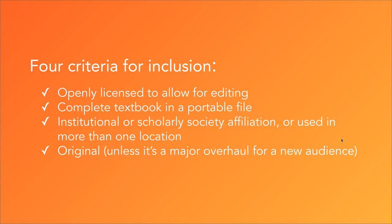And finally, the book must be the original book. We did this with our faculty audience in mind. One of the many benefits of an openly licensed textbook is that it can be changed and adapted to best meet the needs of a student audience anywhere. However, thinking about having all of those adaptations in the library, we figured it would be a bit overwhelming for faculty to weed through all the different variations of a particular book. So we really try to stick to the original book of record, unless it has been heavily adapted for an entirely new audience — for example, if there's an intro to statistics book, and then an intro to statistics for nursing, we would add that because it's for a new audience.